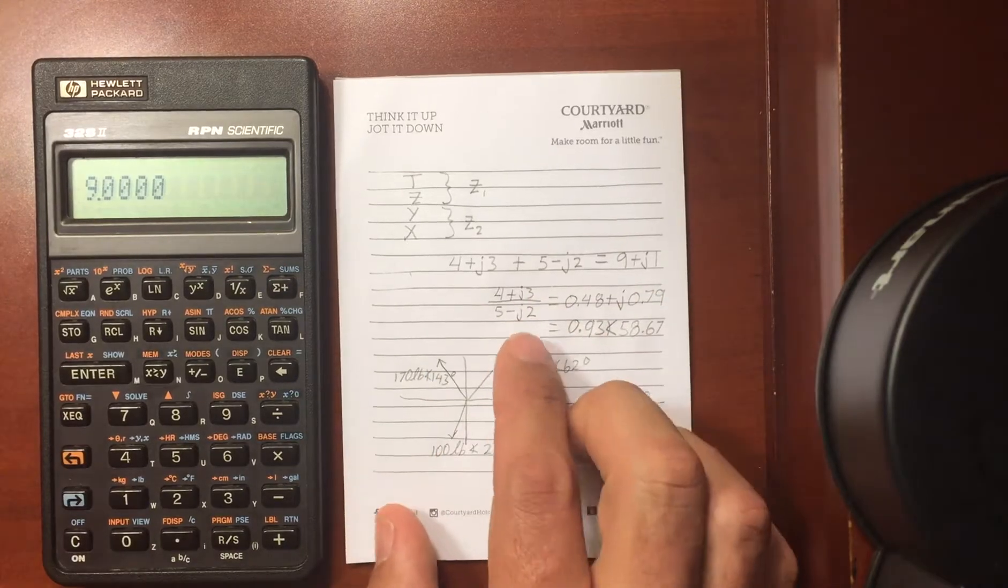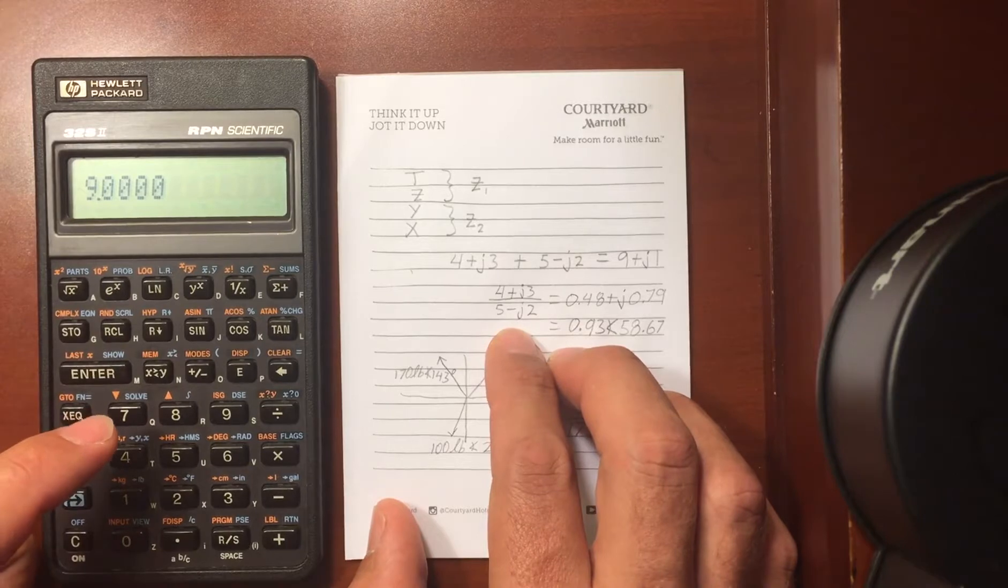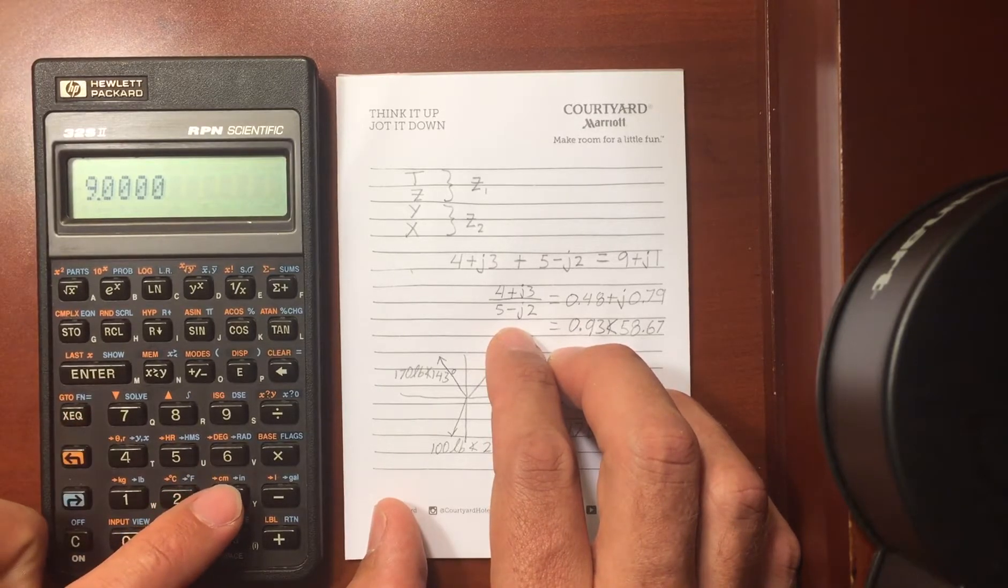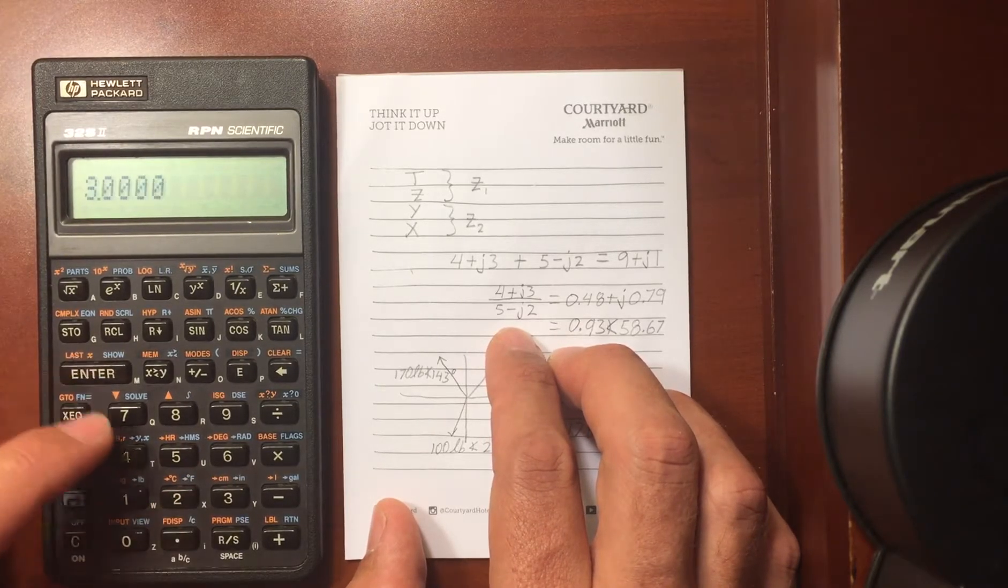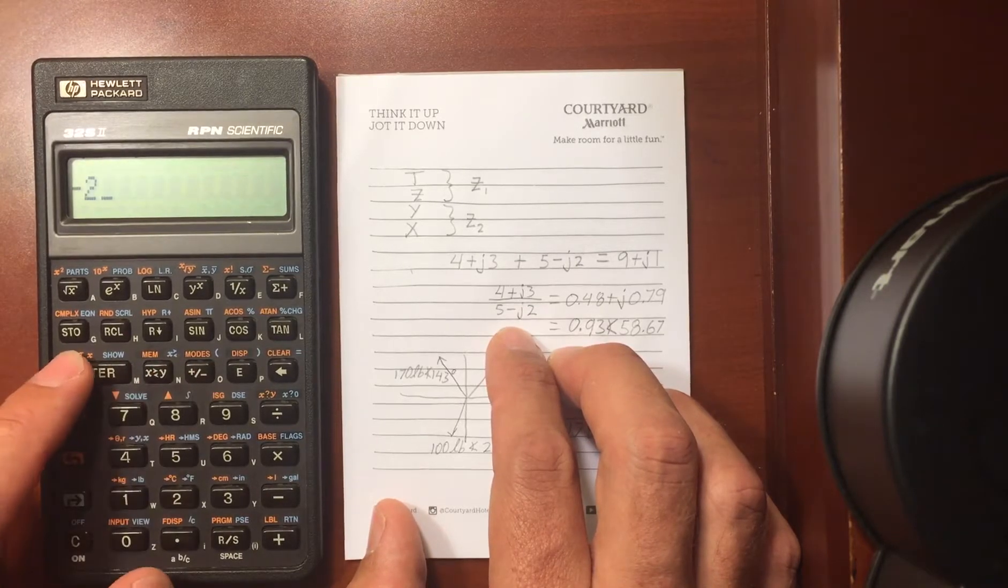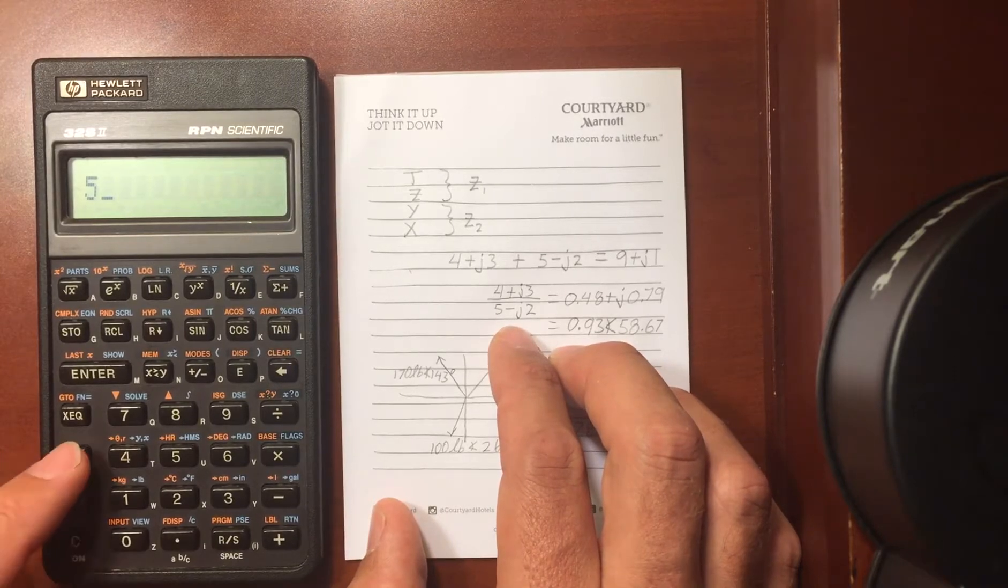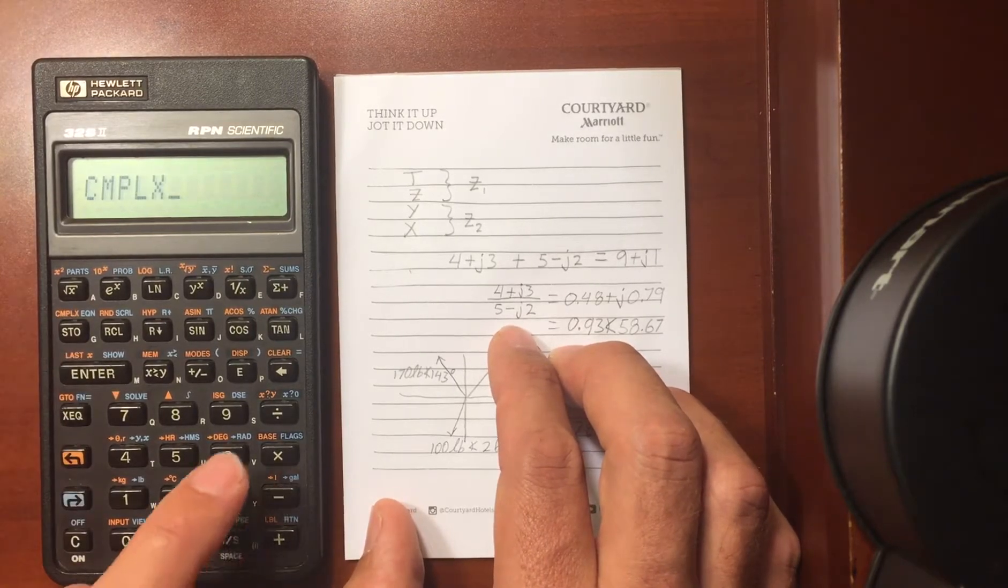If I wanted to divide these two numbers, say 4 plus J3 divided by 5 minus J2, I would enter them in the same order. So I would enter in 3 first, then 4, and negative 2, and then 5, so I've got all four numbers in the stack, and I want to do a complex division.